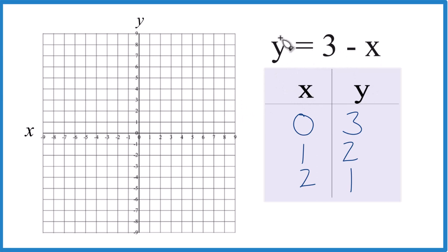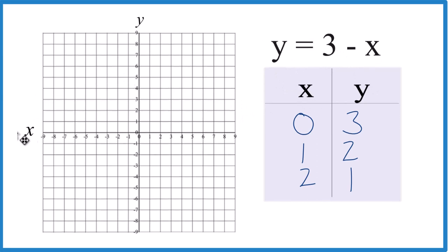So now I could just graph these points, and that'll give me the line for y equals 3 minus x. First point, 0 is x, y is 3. Right there.